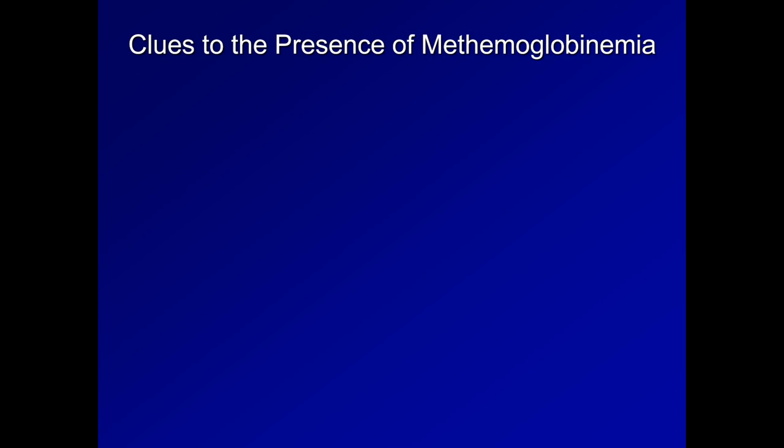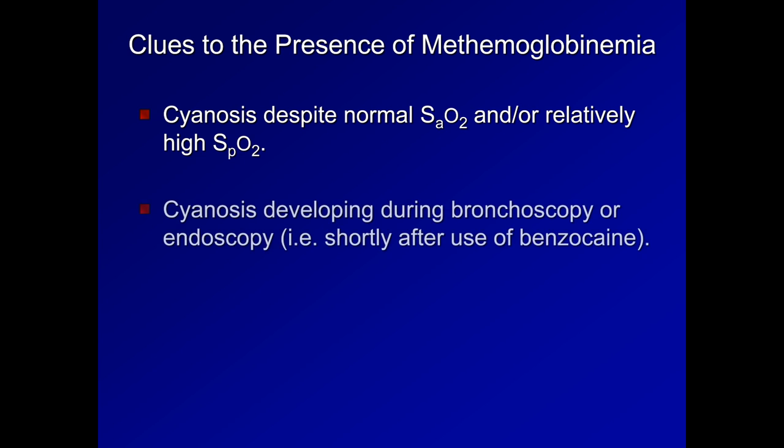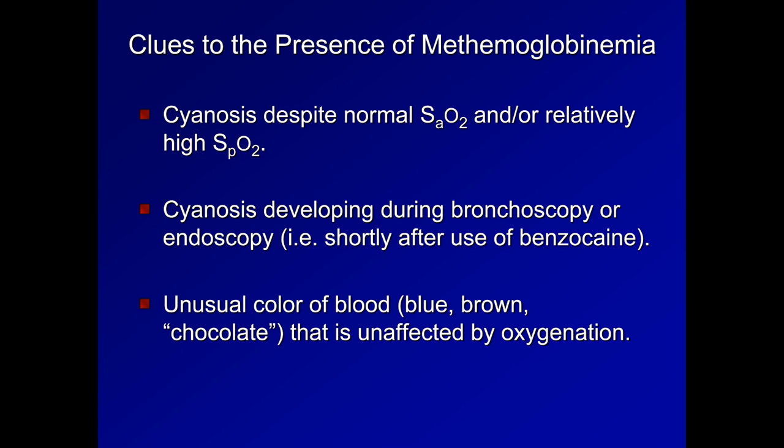Here is a summary of the clues to the presence of methemoglobinemia. First, cyanosis despite normal SaO2 and or a relatively high SpO2. In other words, unless a patient has severe polycythemia, cyanosis requires an O2 sat in the 70s or lower. Seeing a cyanotic patient with an O2 sat in the mid to high 80s should immediately suggest methemoglobinemia. Also, cyanosis that develops during bronchoscopy or endoscopy. An unusual color of blood, as mentioned before. And finally, a significant difference between the SaO2, calculated by ABG analyzer, and the SpO2, as measured by pulse oximetry.